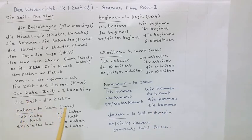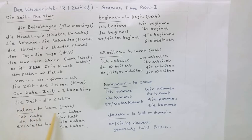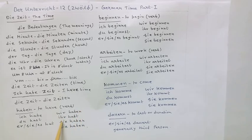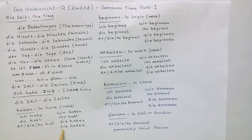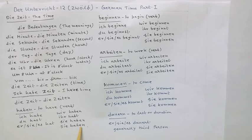And haben verb — it is a very important verb. Ich habe, du hast, er, sie, es hat, wir haben, ihr habt, sie haben, Sie haben. Now, dear viewers, in case of wir, in case of sie (they), and in case of Sie (formal you) — when we are speaking to a senior person or a teacher — the verb is in the infinitive form.